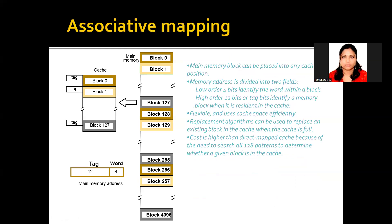The next methodology is associative mapping. Here there is no formula. You can pick any block number and place it in any of the available blocks. All 128 blocks are available — I can pick block number 127 and put it in block number 1, 2, or anywhere that is free. Then I can take block number 255 and put it in block number 0. In any pattern you can store the data, whichever block is free. For the first 128 blocks, there is no need to go for any page replacement.